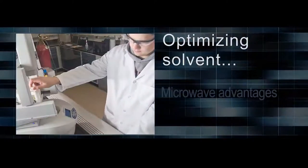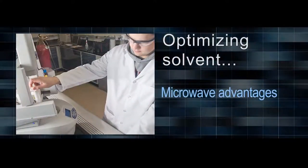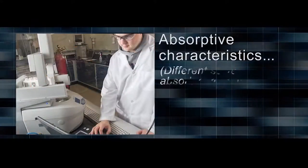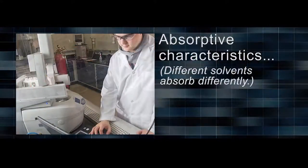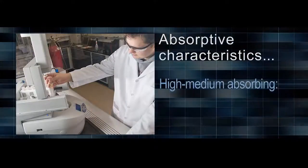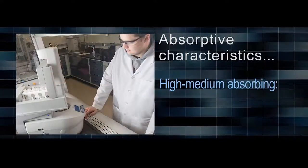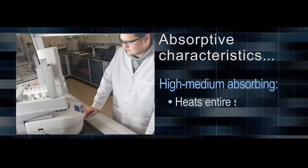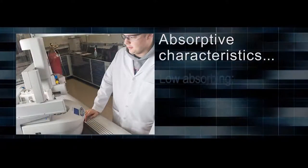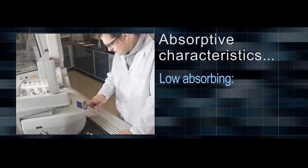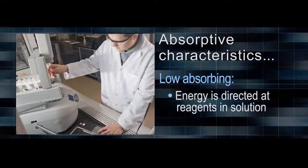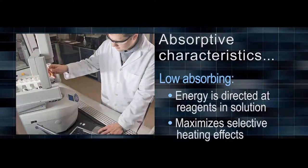When optimizing solvent, the microwave offers chemists some additional characteristics which they can use to their advantage. Different solvents exhibit different microwave absorptive characteristics. High or medium absorbing solvents take in a lot of microwave energy and are well suited for heating the entire reaction solution and reaching high temperatures. Low absorbing solvents will be largely transparent to microwave energy and allow for this energy to be directed at reagents in solution for maximizing selective heating effects.